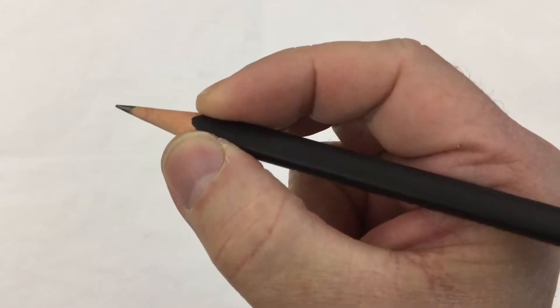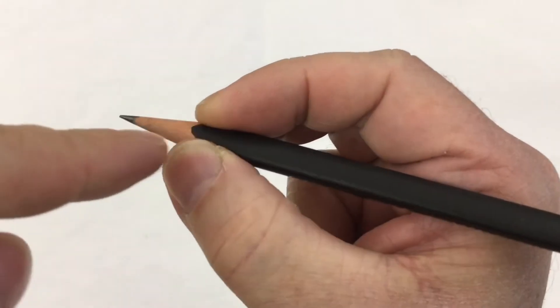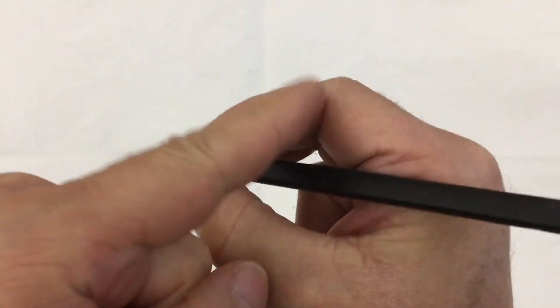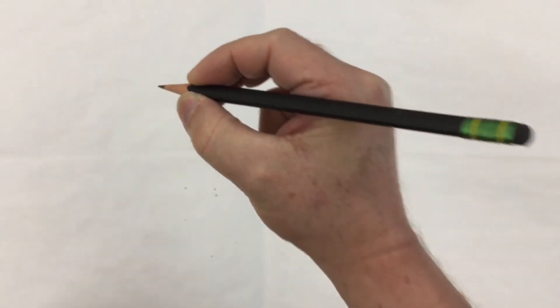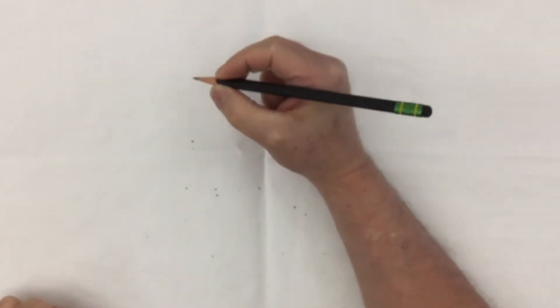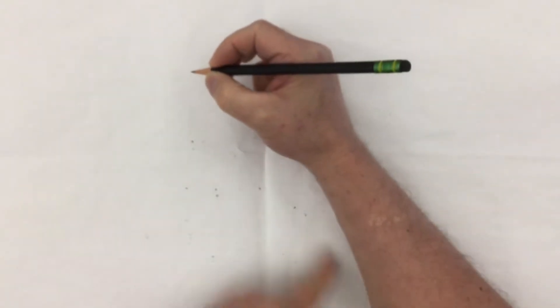You can see where I'm holding it, right about where the paint ends. I've got this nice teardrop shape right in here. When I write, I want to make sure that my arm is flat on the desk, not up off the desk but flat.